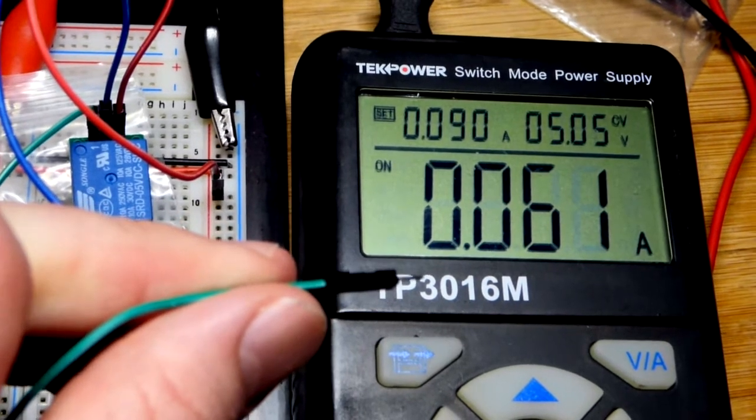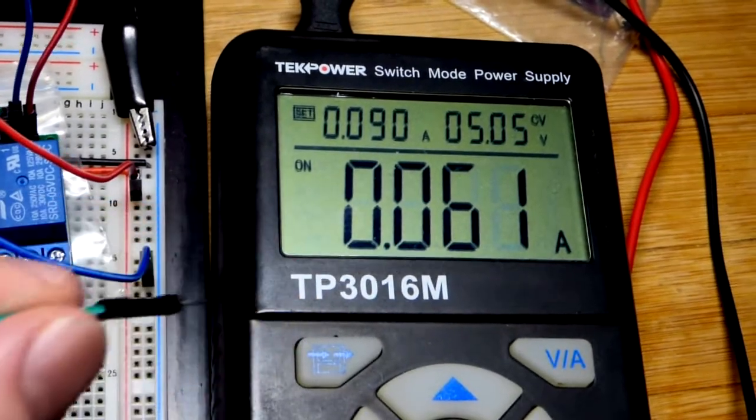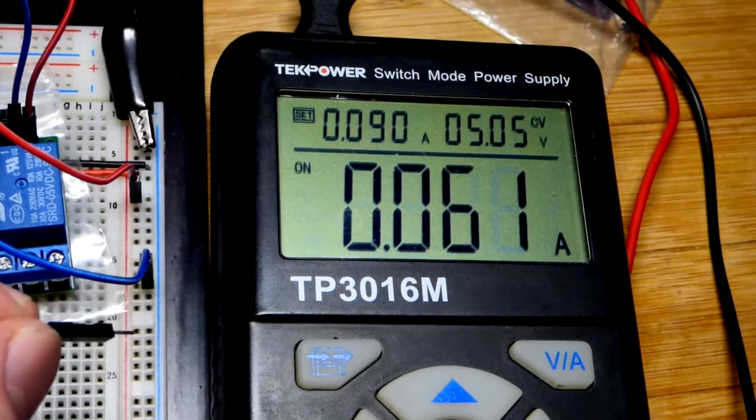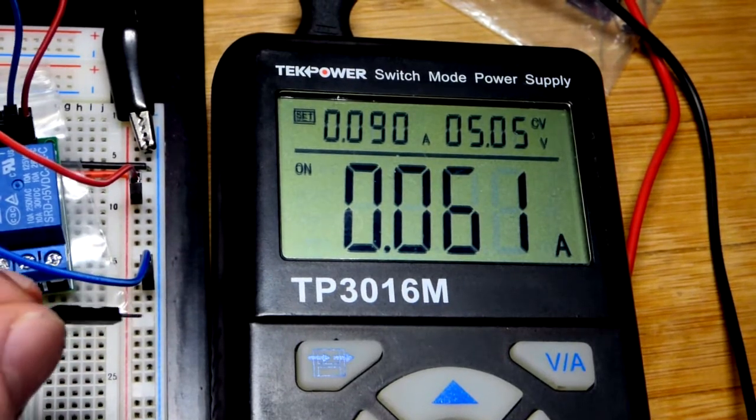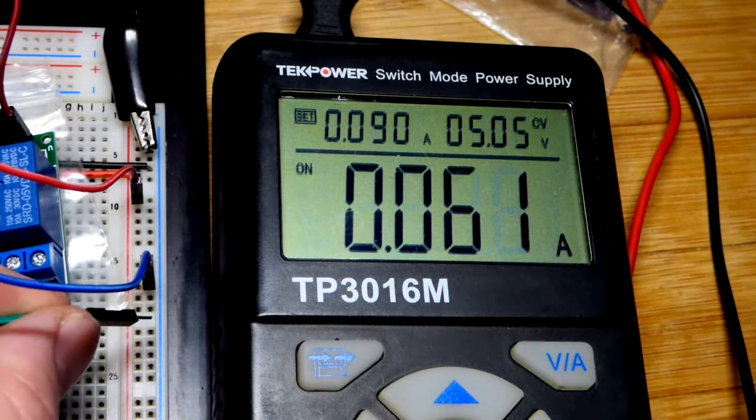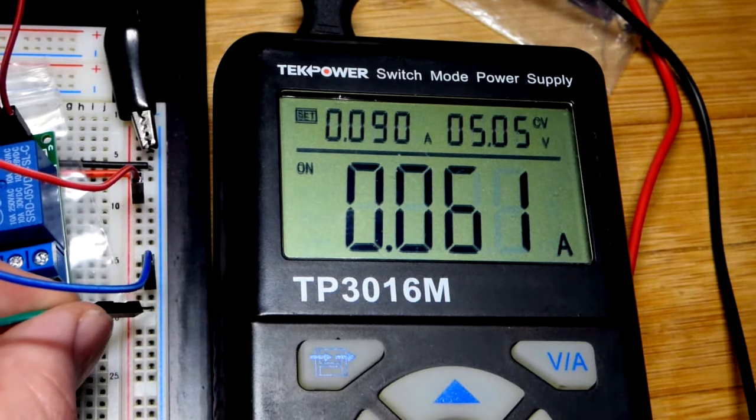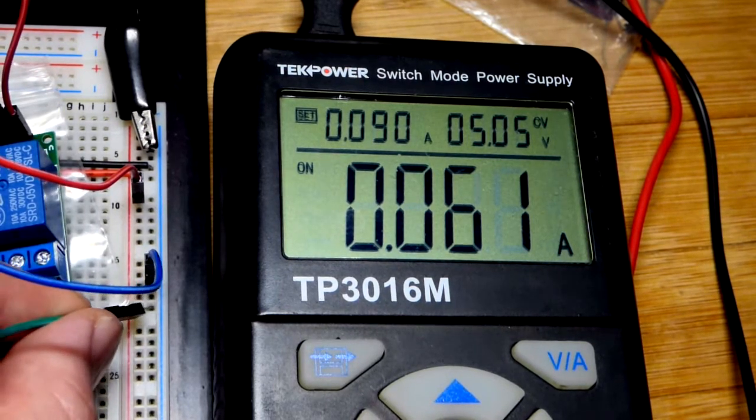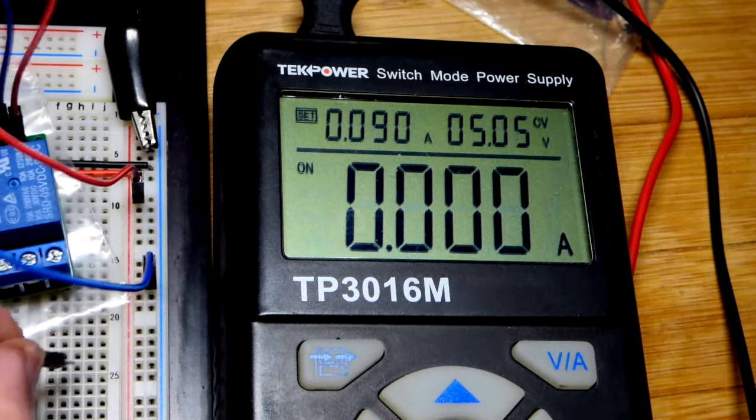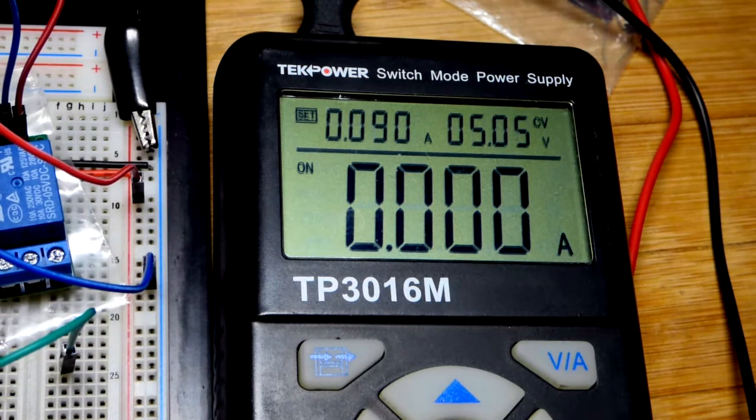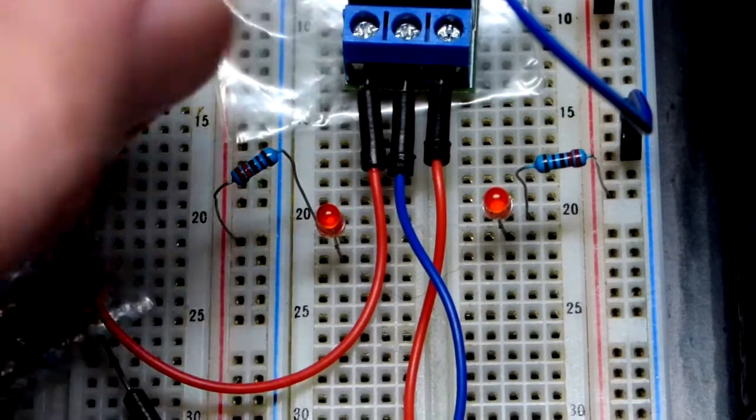There's a lot of current flowing but now it's holding the switch in the normally open position in relationship to common. We'll give another low signal again and that's how you click it back so that the normally closed pin is connected to the common pin.